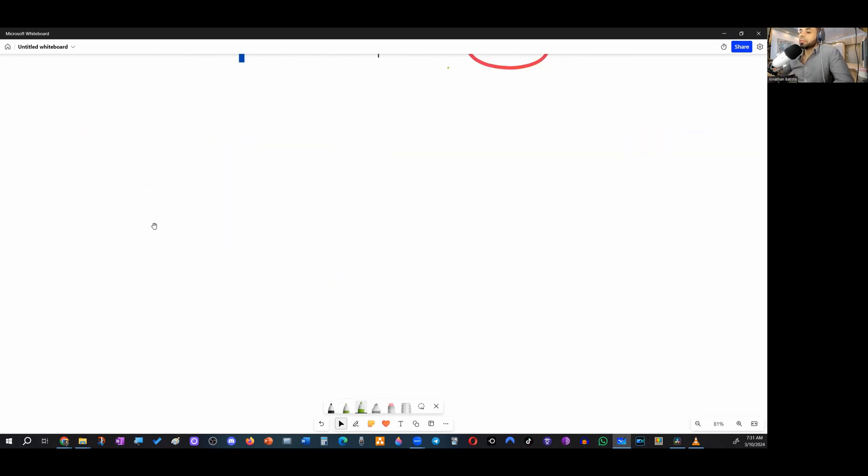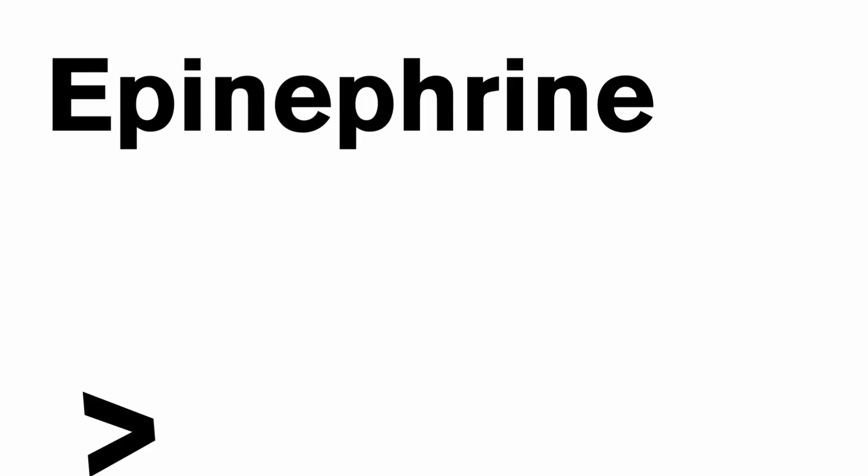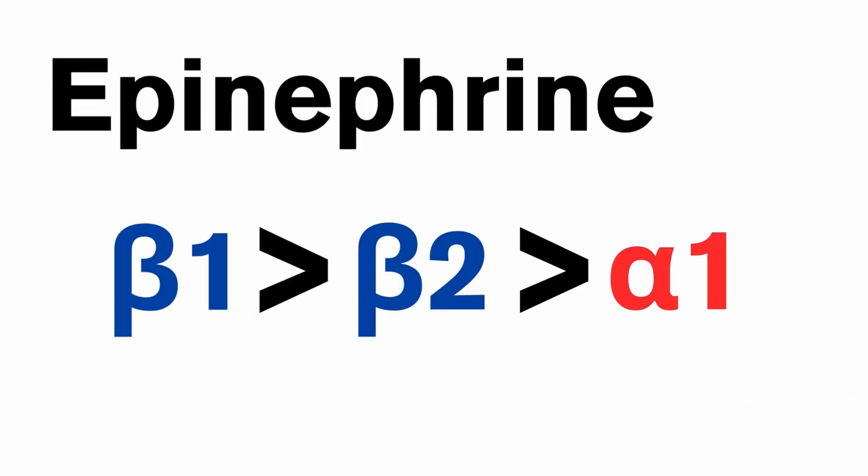If you look at epinephrine, E looks like a B. So epinephrine favors beta receptors. Typically at a low dose, you'll see that epinephrine favors beta one, beta two, and then alpha one.